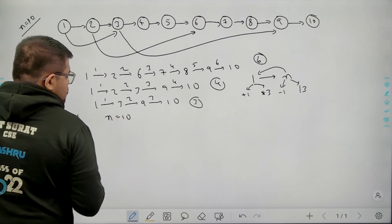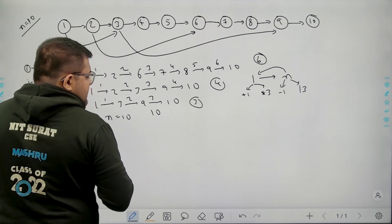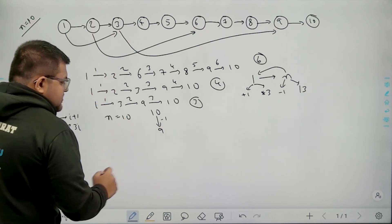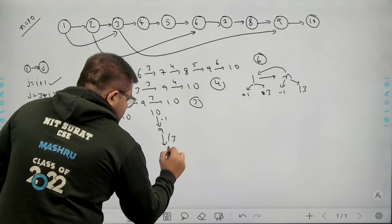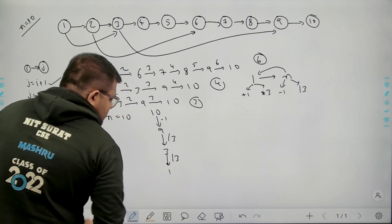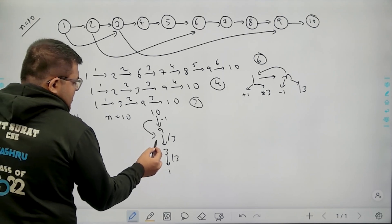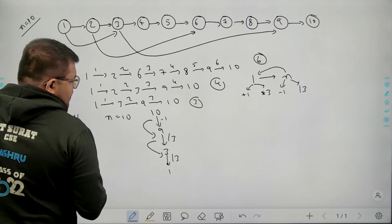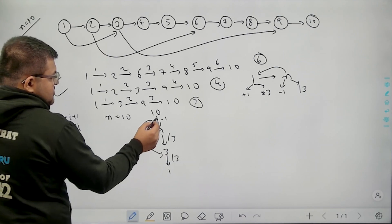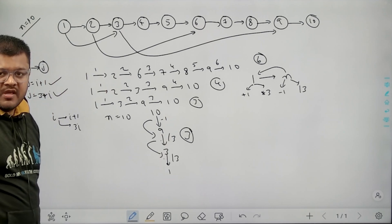Let's take the example where n is 10. I start with 10 and want to make this value 1. Is 10 divisible by 3? No — subtract 1, it becomes 9. Is 9 divisible by 3? Yes — divide by 3, it becomes 3. Is 3 divisible by 3? Yes — divide by 3, it becomes 1. We have reached 1. How many steps did I take? 1, 2 and 3 steps. So my answer is 3.